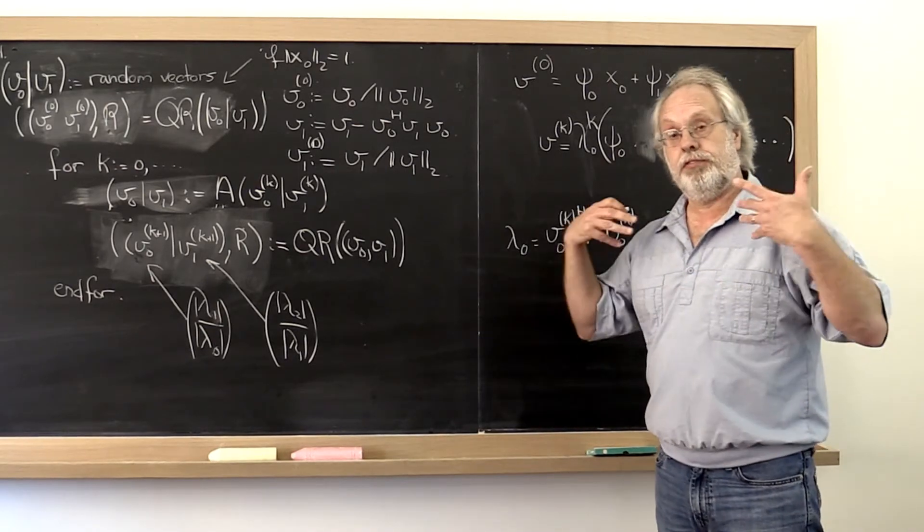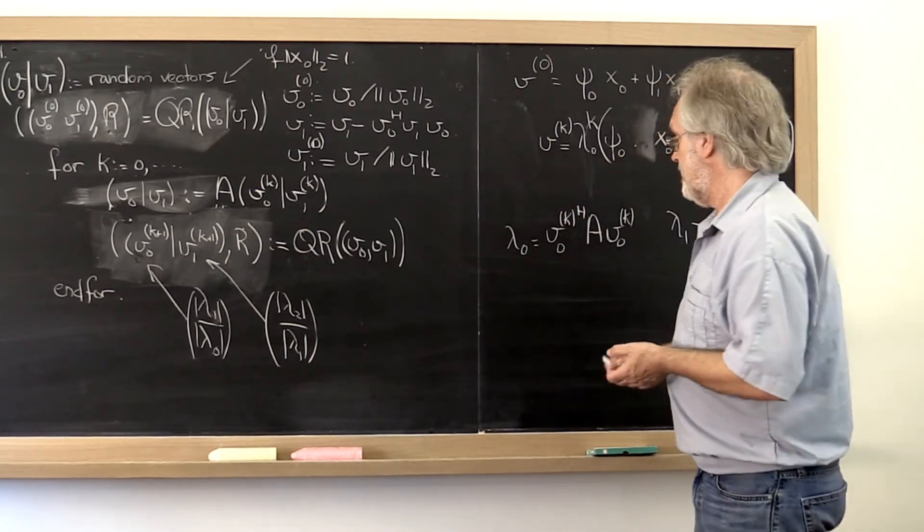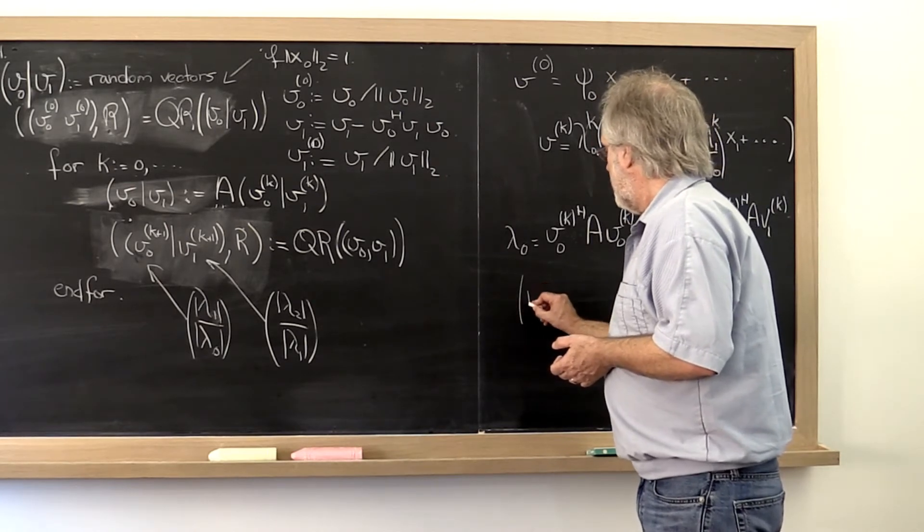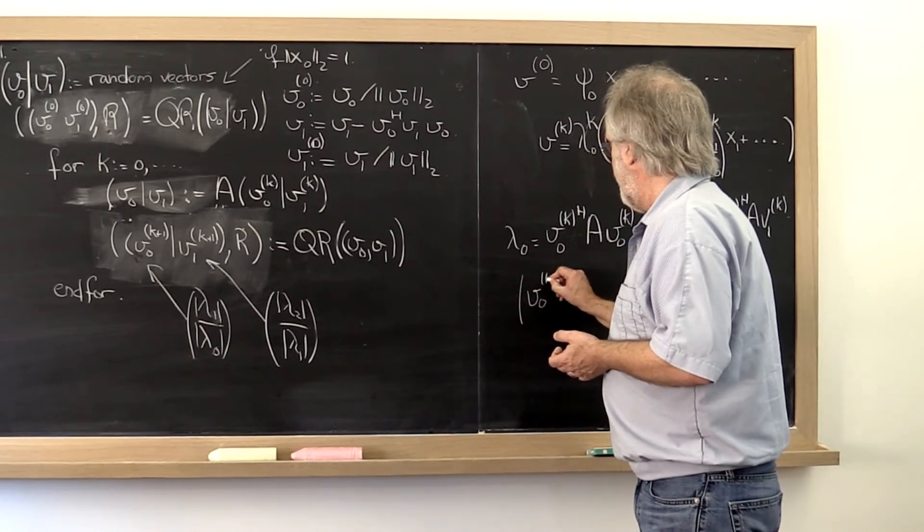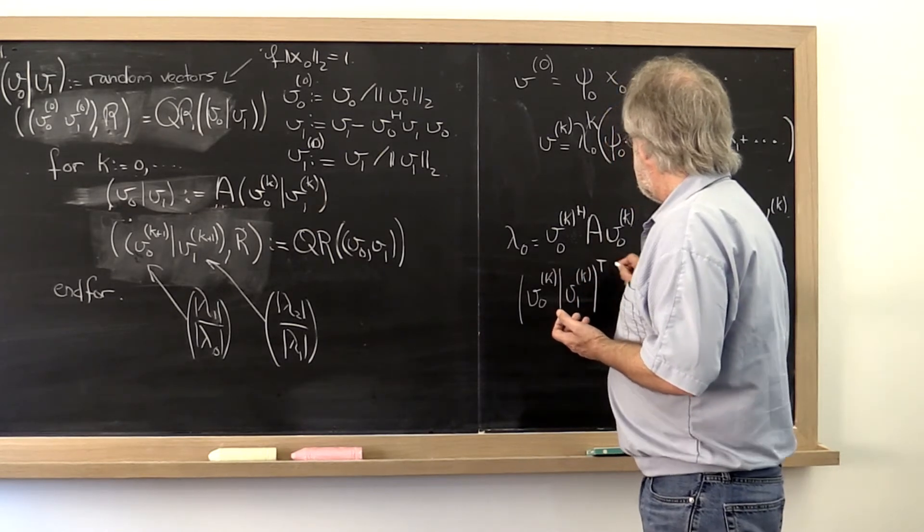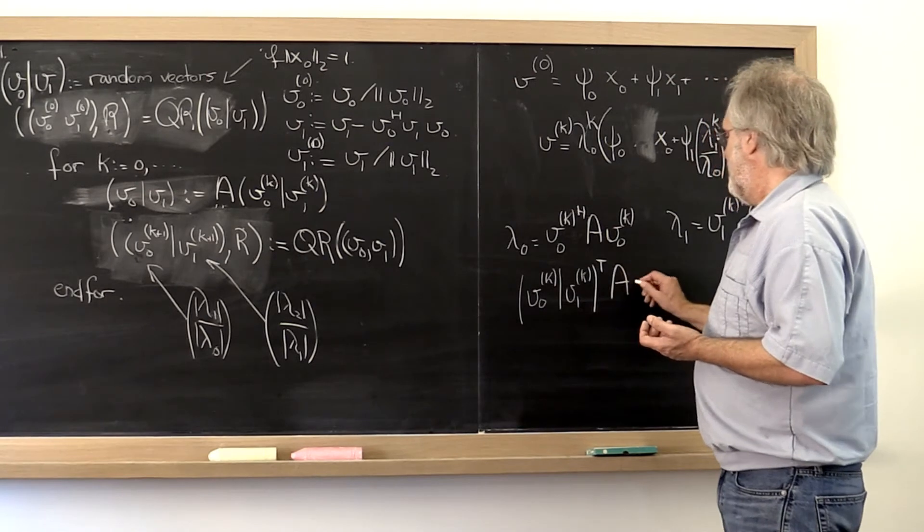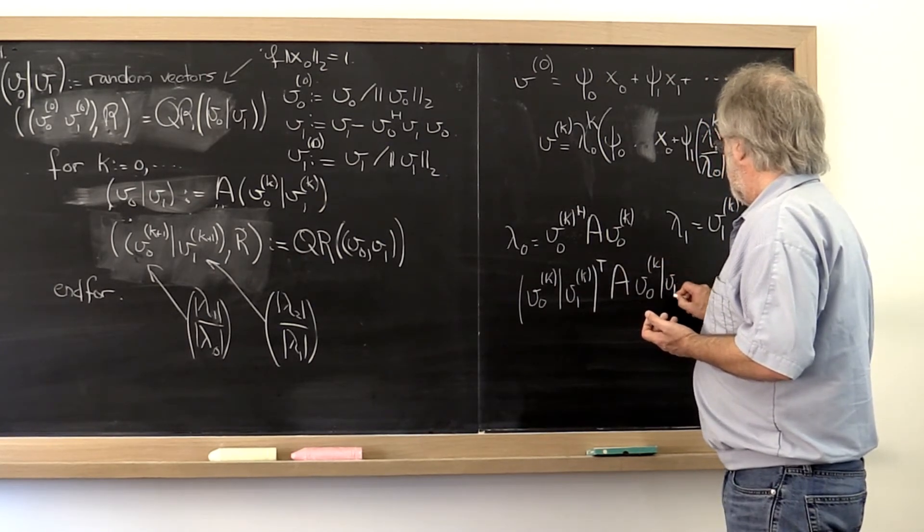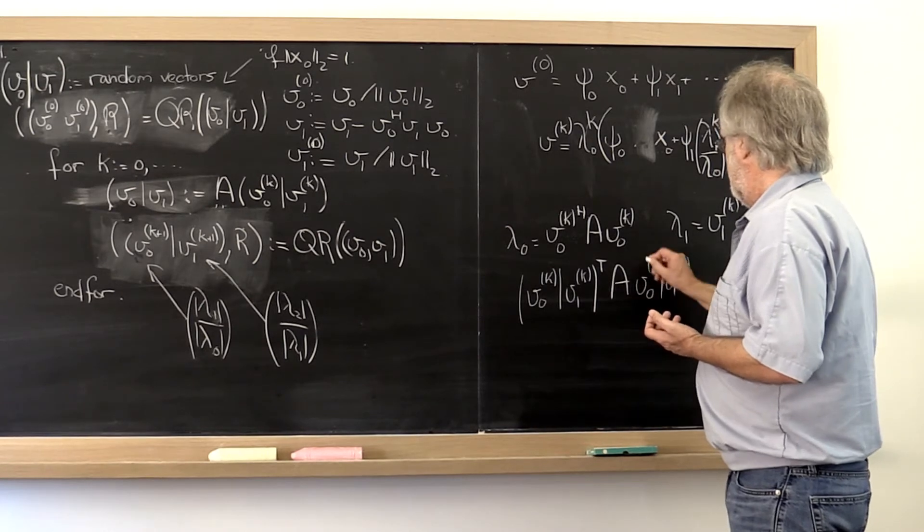And one elegant way of looking at that simultaneously is to say, well, if we look at the matrix that comes from doing v zero k v one k transpose times A times v zero k v one k, like that,